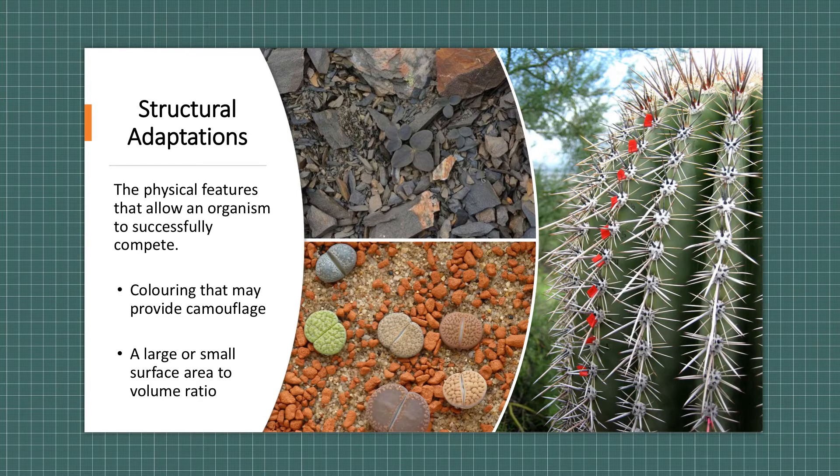The first example I've got here is Corydalis hemidysentra and it lives in southwest China. As you can see from it, it's very camouflaged. It's got what we call disruptive colouration so it blends in with the background, which means it's likely to not be eaten by any herbivores.